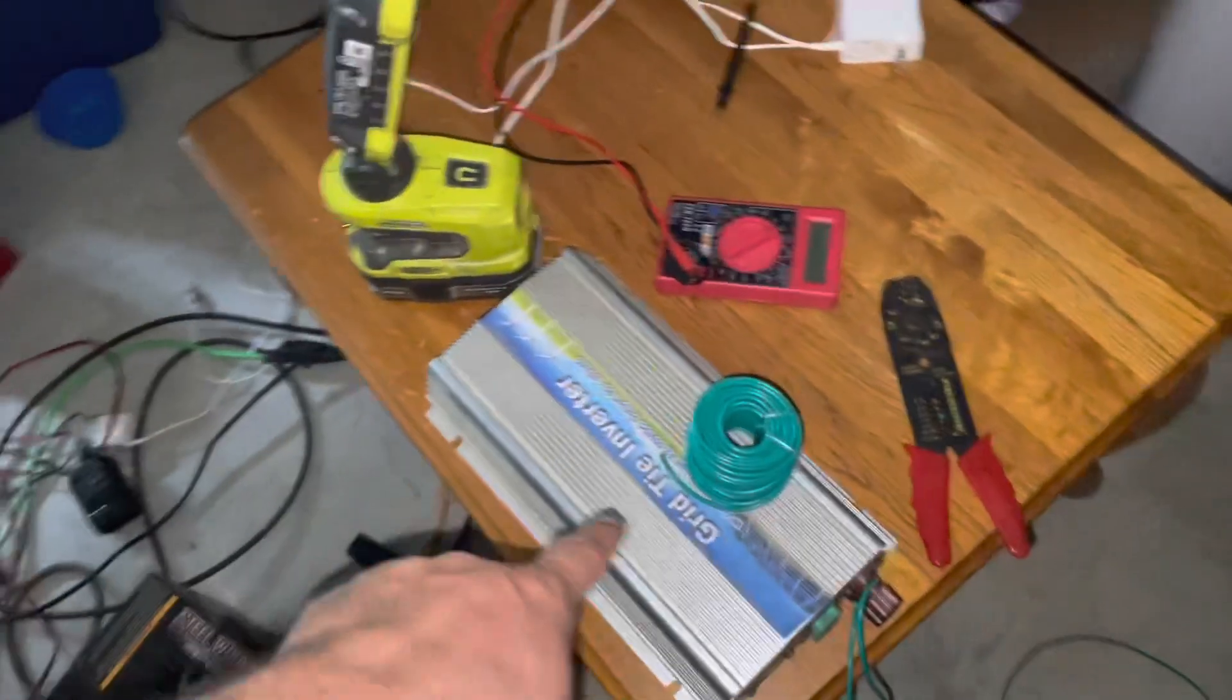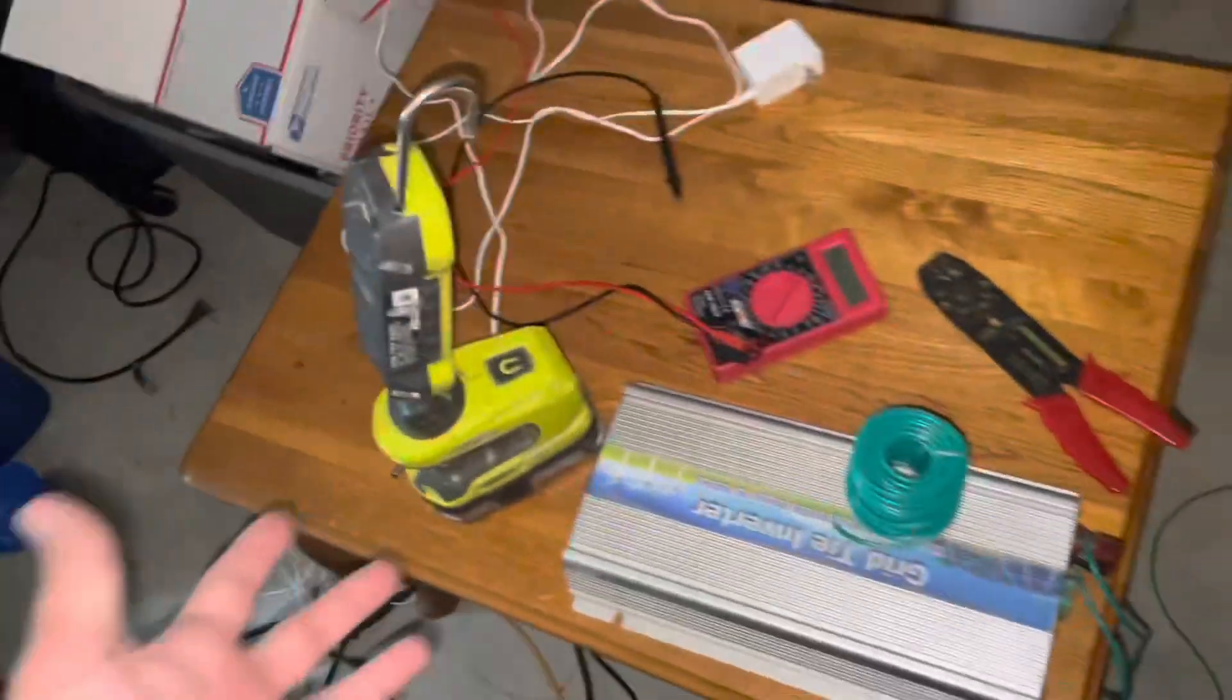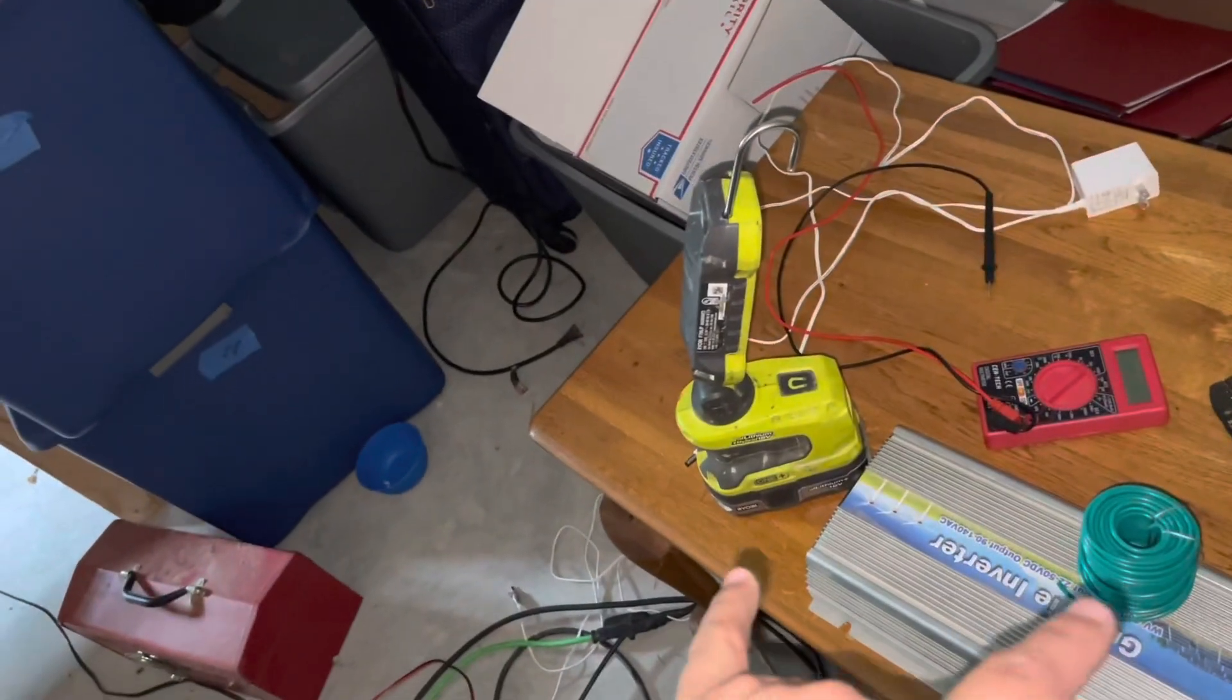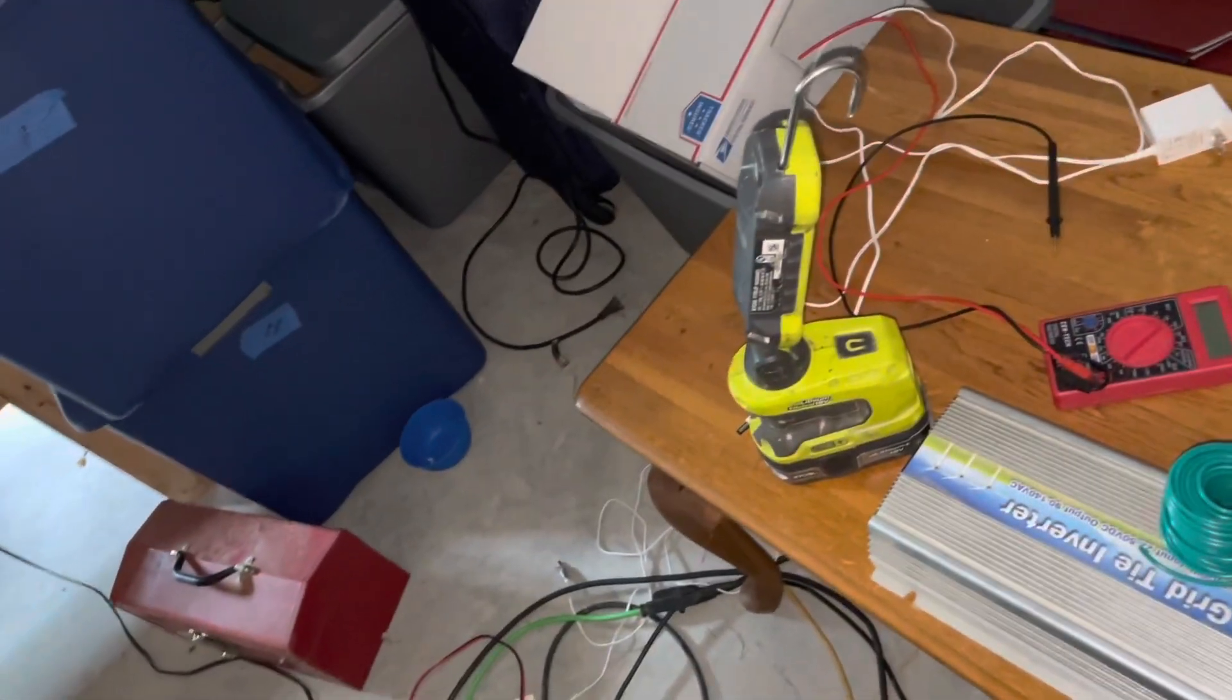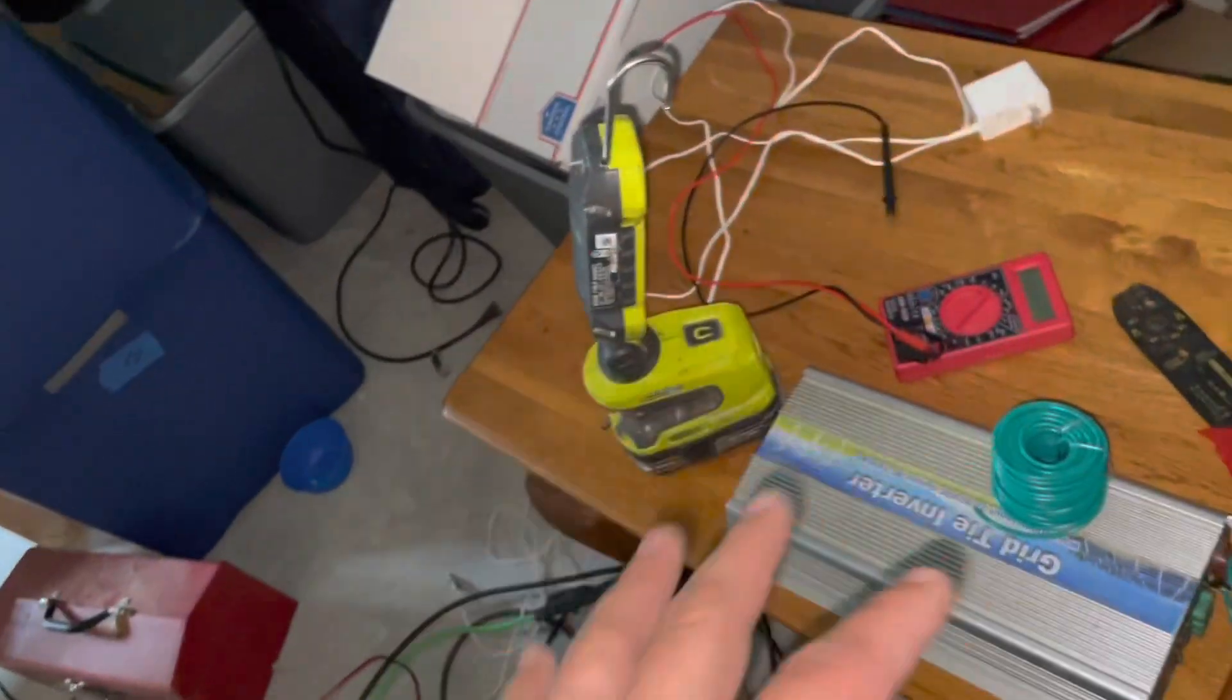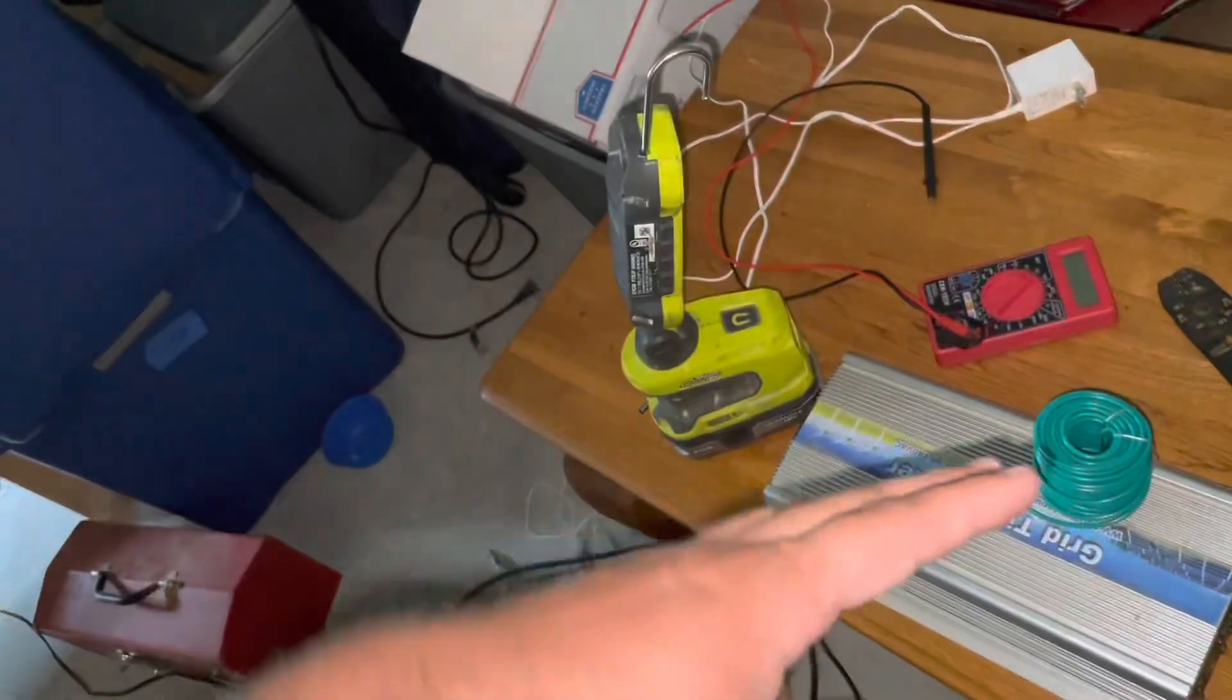All right. So I've done a little bit more research. And coming to find out, I was... I am dumb. And, you know, this is no surprise here. But I will have to have a battery bank in between the inverter and the solar panels. Or maybe at least just a charge controller. I don't know if I need an actual battery bank. But I need something to stabilize the power.